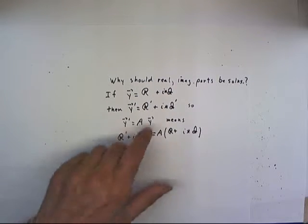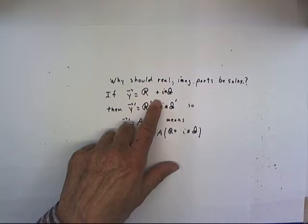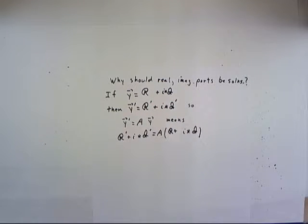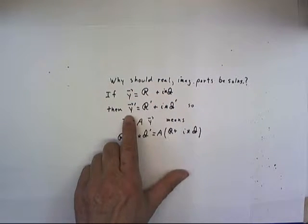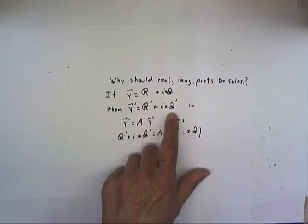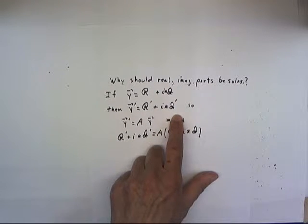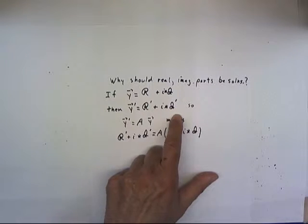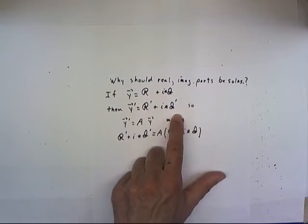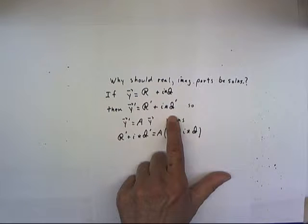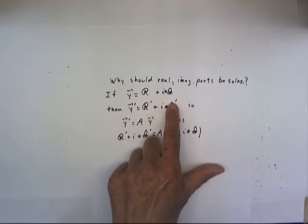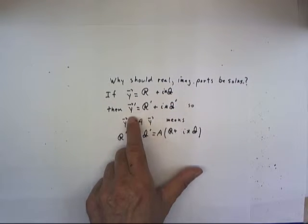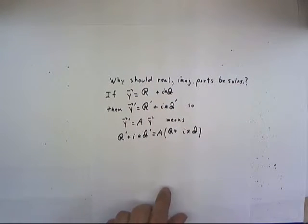In any case, y is script R plus i times script I. It follows by the linearity of the derivative that y prime will be R prime plus i times script I prime. And you can go back to the solution to any of these equations and see exactly what that means. You can substitute the real and imaginary parts of the solution to the equation we've been working on and convince yourself that this must be so.